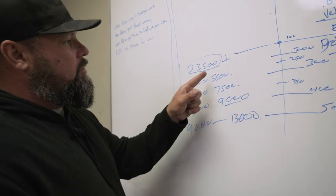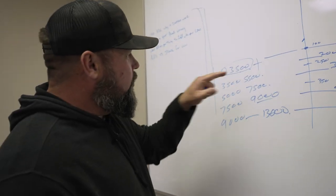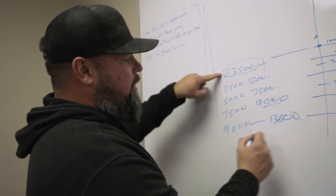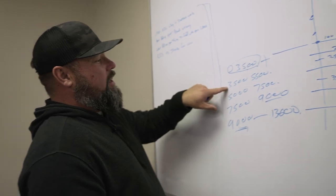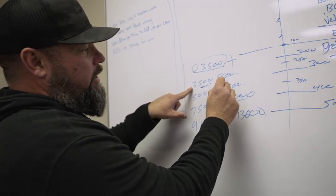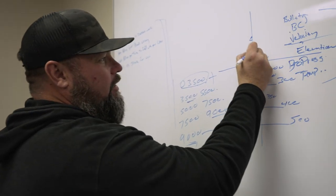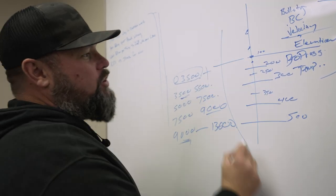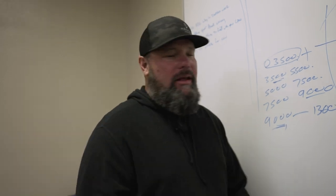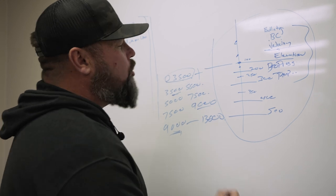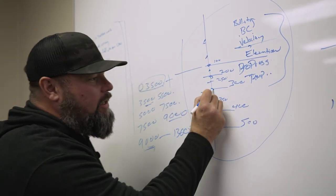But when you get up to, let's say, Alamogordo, New Mexico and it's a 120-degree day, this bullet's not going to hit there anymore — it's going to hit up here. Let's say you go to Colorado and get up in the deep Rockies over 9,000 feet — this bullet's going to hit way up here because the air is thinner. Let's say you're at 3,500 feet and it's super cold — the bullet's going to hit way down here because it's not going as fast. So it's never going to hit on the BDC exactly the same anywhere.